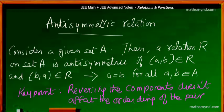It simply implies that A is equal to B for all A and B elements of set A. The key point in the anti-symmetric relation is that reversing the components of the ordered pair doesn't affect the ordering of the pair. We know that an ordered pair (2, 3) is simply not equal to (3, 2), but in this particular case it is equal, which simply means that we must be dealing with the same components.